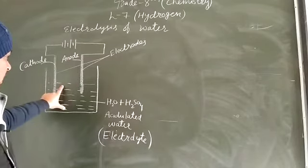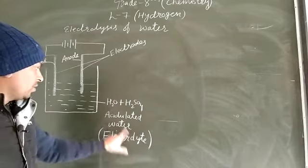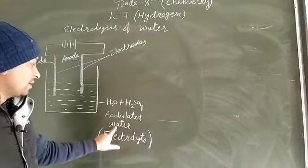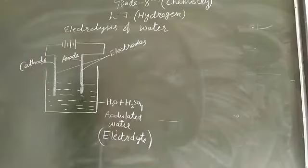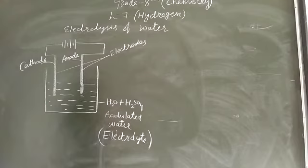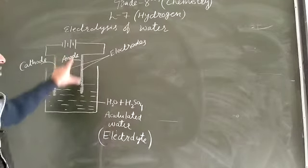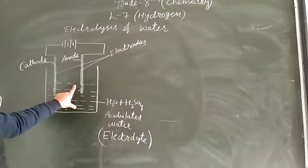This acidulated water is also known as the electrolyte. An electrolyte is a substance or solution of any salt which conducts electricity. We use electrolytes in electrochemistry or electrolysis — only those solutions which conduct electricity.